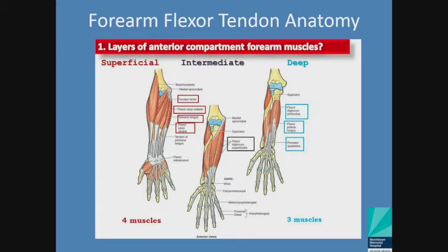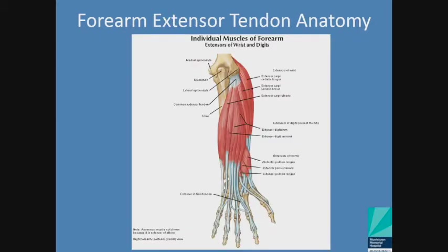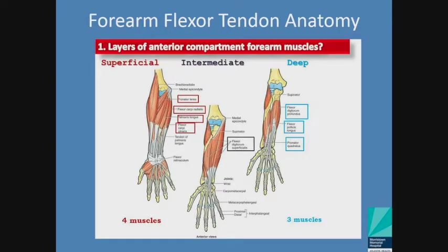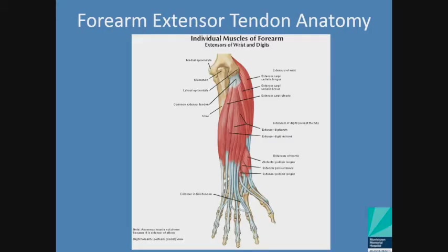Those flexor muscles all emanate from the medial aspect of your elbow — your medial epicondyle. If you look at the nail side of your hand and look at the forearm on top, you're talking about your extensor tendons. These almost all emanate from the lateral epicondyle. They include the ECRL, ECRB, extensor carpi ulnaris, the common extensor tendons, extensor digiti minimi — which specifically moves your small finger — and extensor indicis proprius, which specifically moves the index finger, as well as the extensors of the thumb.